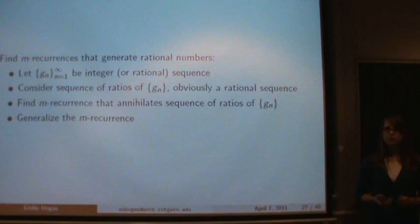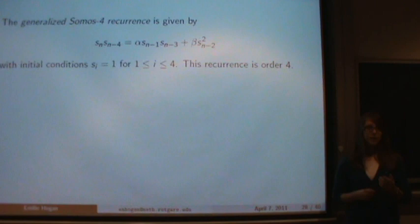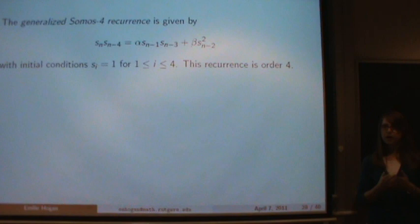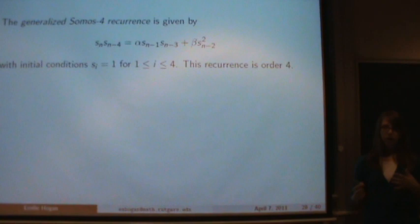The integer sequence I'm going to use is the SOMOS 4 recurrence—the same idea as the previous one but order 4 instead of order 6, and with coefficients alpha and beta. We let the initial conditions all be 1. It's also known that this recurrence produces integers even if the coefficients are any integer, not just 1s like in SOMOS 6. All you need to know is that it produces rational numbers.